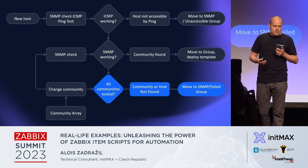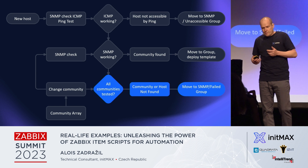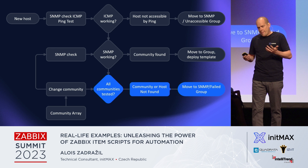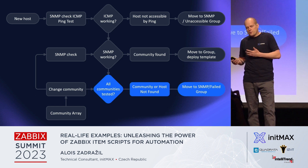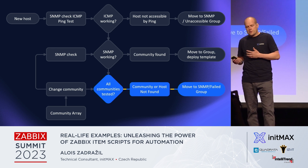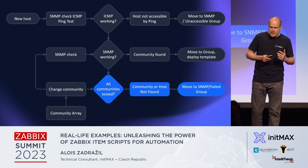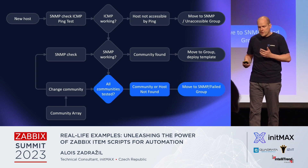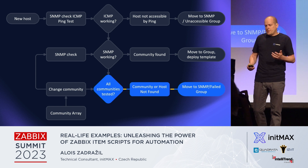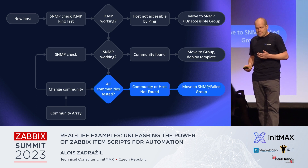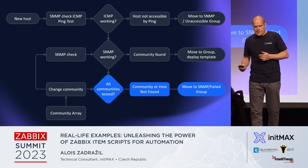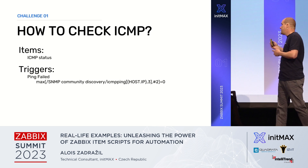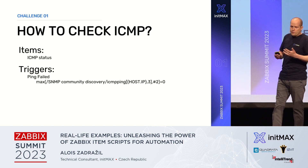If all communities from the list were tested and no community string was correct, we know we don't have a correct community string, or SNMP tests on this device don't work for some other reason, so we move this host to a host group with failed devices. That was the diagram overview.